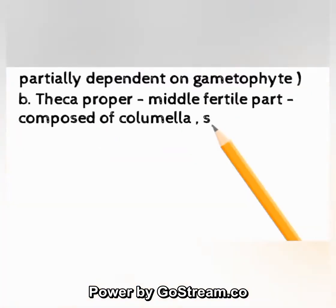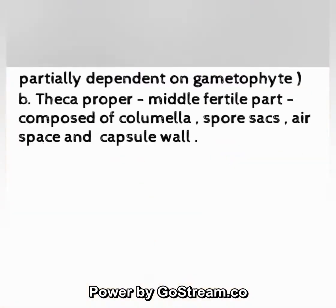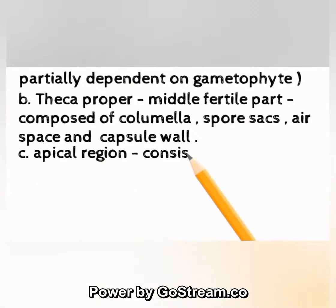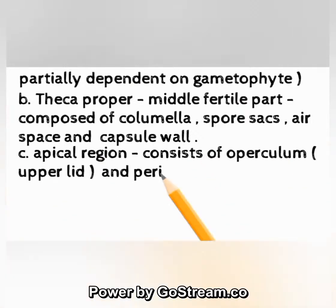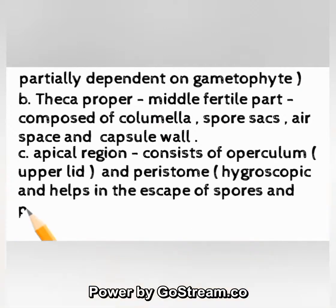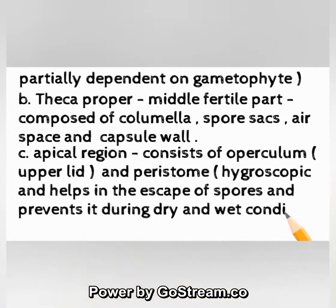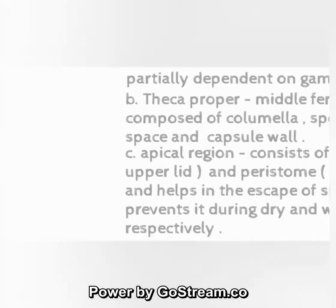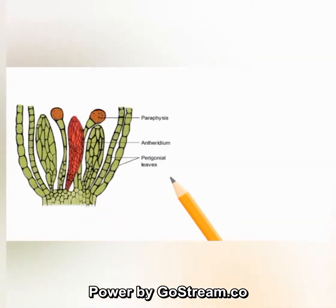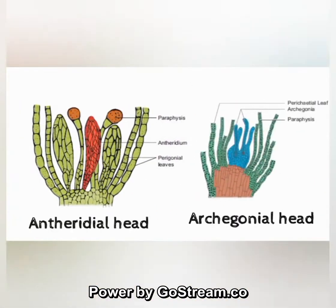The theca is the proper middle fertile part, composed of columella, spore sacs, air space, and capsule wall. The apical region consists of the operculum (upper lid) and the peristome, which is hygroscopic and helps in the escape of spores, preventing release during wet conditions. Diagrams of the antheridial head and archegonial head of Funaria are shown here.